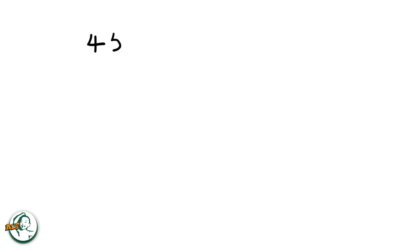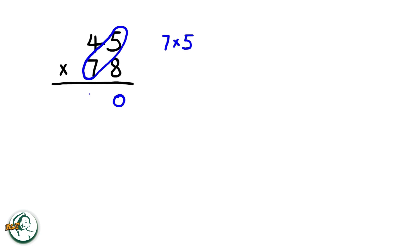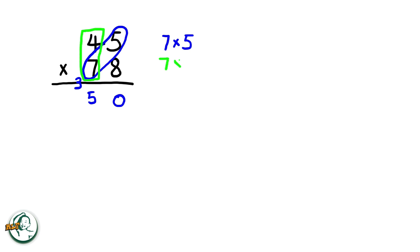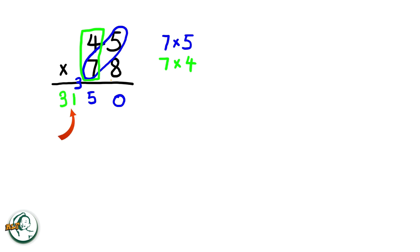Let's do another example: 45 times 78. Firstly, we start by writing down a 0. We multiply 7 by 5, giving us 35. We write down the 5 and carry over the 3. Next, we multiply 7 by 4, resulting in 28. Adding the carried over 3 to 28, we get 31.